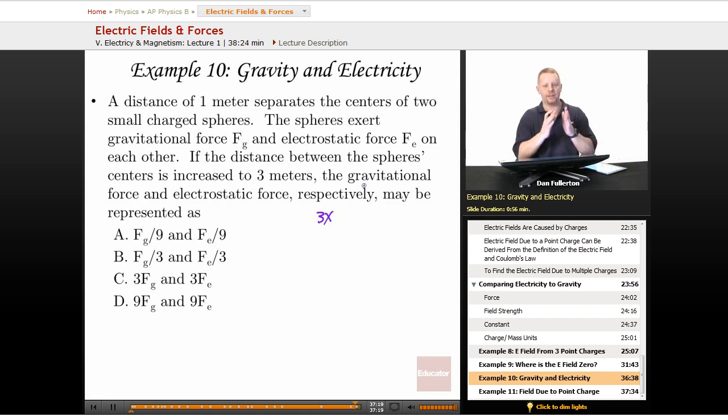Well, we're gonna have a smaller force because they're getting further away. So because they're both inverse square laws, our correct answer must be A. One-ninth the gravitational force and one-ninth the electric force.